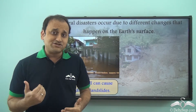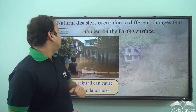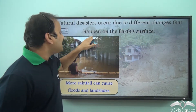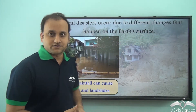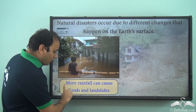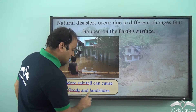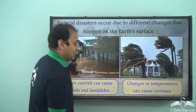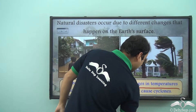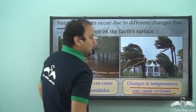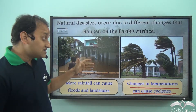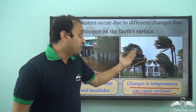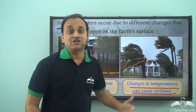Why do natural disasters occur? Natural disasters occur due to different changes that happen on the Earth's surface. For example, more rainfall can cause floods and landslides, and changes in temperatures can cause cyclones. So just the change in climate can result in different natural disasters.